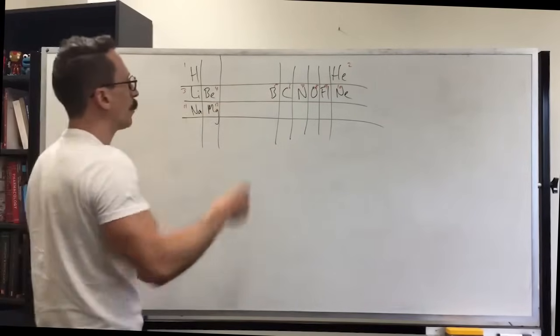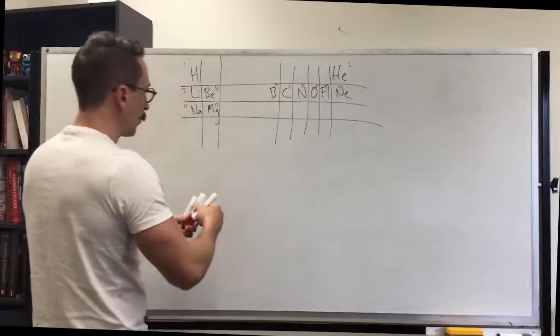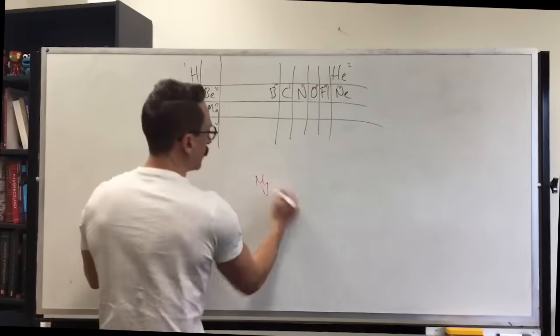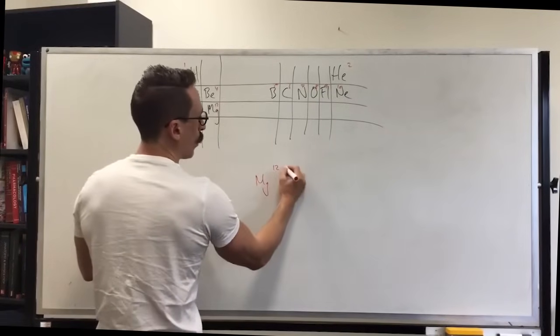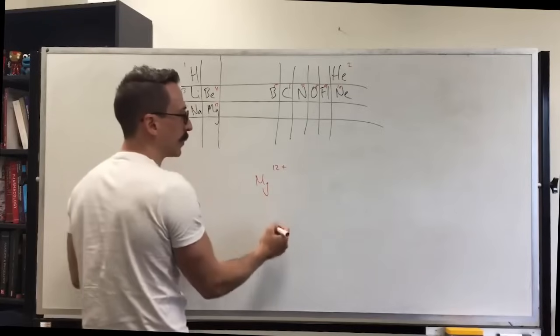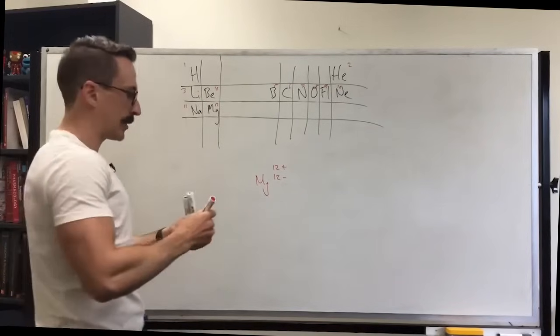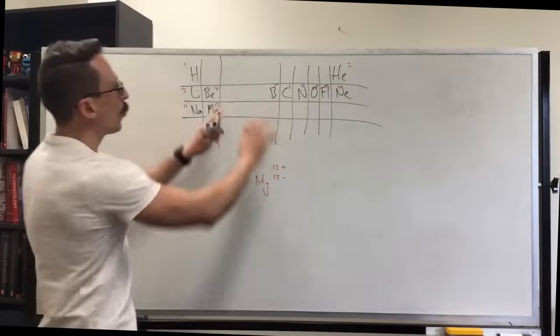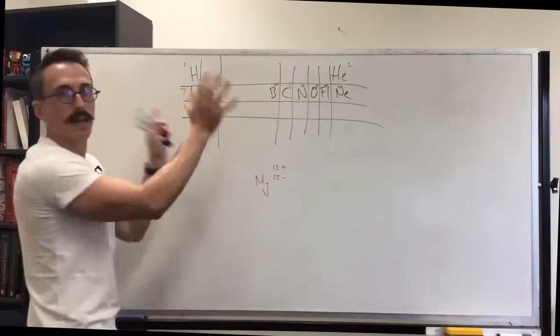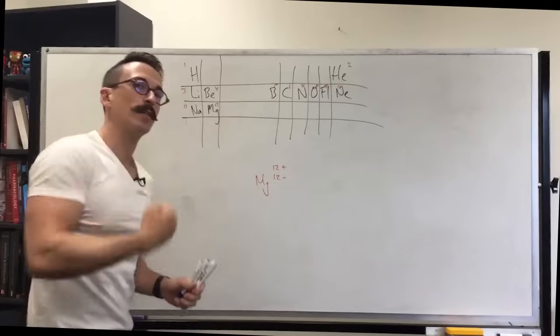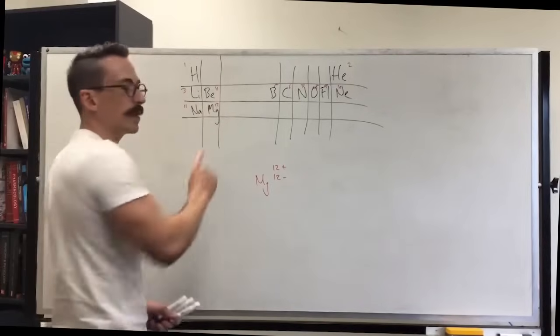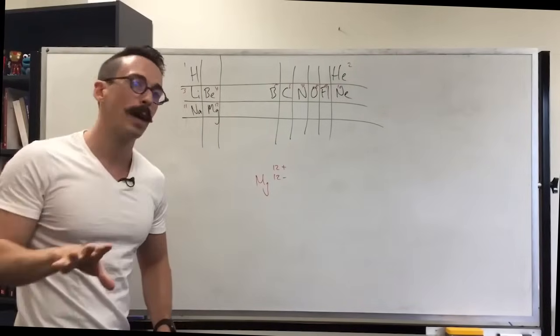Magnesium is the 12th atom in the periodic table and what that actually means is this. Magnesium has 12 protons which are positive things and it has 12 electrons, negative things. This is another thing. Biologically, so when they're in the earth they're fine like this. When they are ingested and they're in our body they hate being in this form.